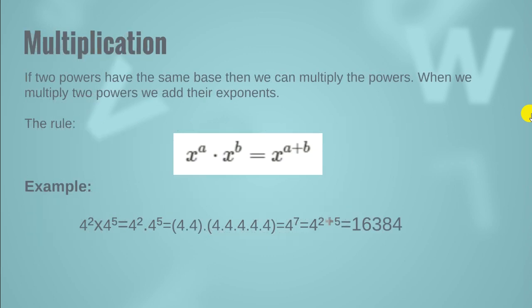Now, power in terms of multiplication. If two powers have the same base, then we can multiply the powers. When we multiply two powers, we add their exponents. You can see the rule: we have base x, and a product of x raised to the power a multiplied by x raised to the power b. Since the base x is the same, we add their exponents a and b and write it as x raised to the power a plus b.